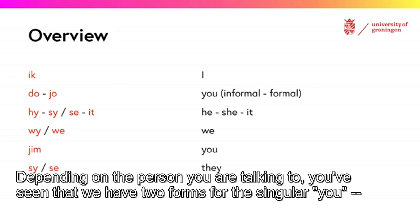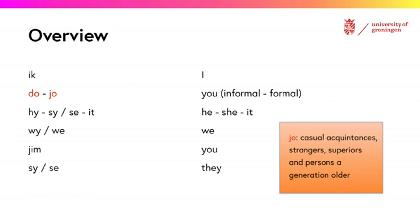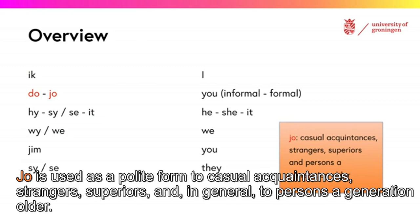Depending on the person you are talking to, you've seen that we have two forms for the singular 'you': do and yo. Yo is used as a polite form to casual acquaintances, strangers, superiors, and in general to persons a generation older.